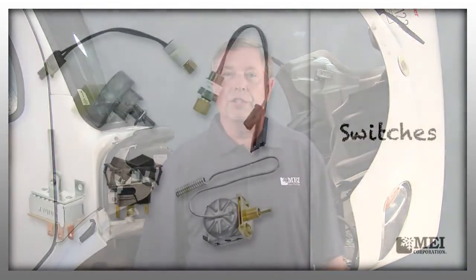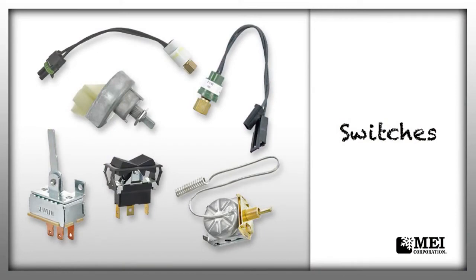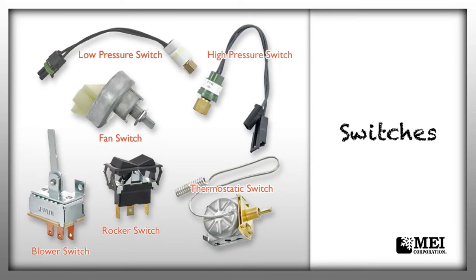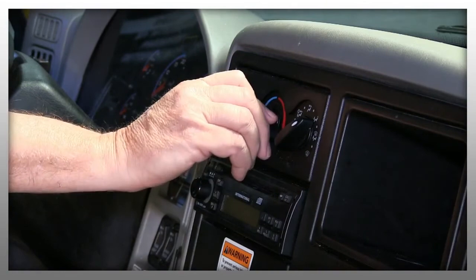Both the receiver dryer/expansion valve system and the CCOT accumulator system are controlled by switches. We have high pressure switches, which keep the refrigerant from going too high and causing failure. We have low pressure switches that do not allow the system to come on if there's not an adequate amount of refrigerant. We also have switches that control the clutch fan by the radiator. And we have a thermostatic switch in the dash, which the driver can set to control how cool or warm he'd like the system to run. These will be tested in a later segment.